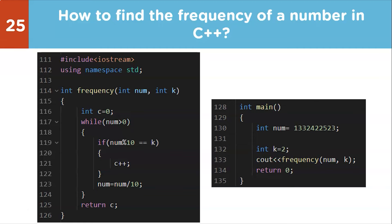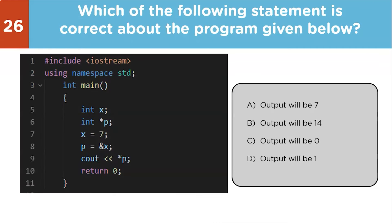Output-based question: a variable x is declared and a pointer p is created. The value 7 is assigned to x, and the memory location of x is stored in pointer p. Using the dereference operator to display the value at that memory address gives us 7, since the value stored at that location is 7.